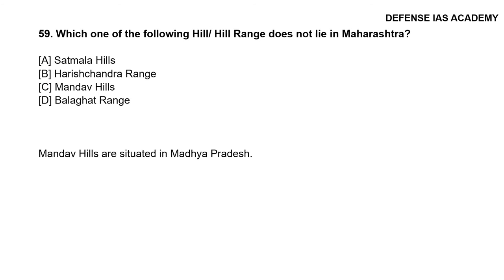Question 59: Which of the following hill or hill range does not lie in Maharashtra? The correct answer is option C, Mandav Hills. The Mandav Hills are located in Madhya Pradesh.